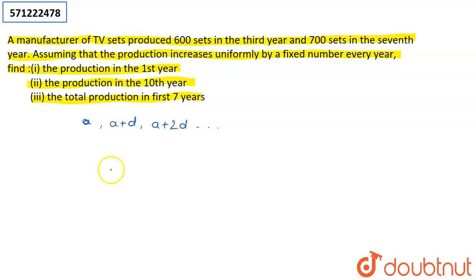So for any arithmetic progression, the nth term is given by a_n = A + (n-1)D, and the sum of first n terms is given by S_n = (n/2)[2A + (n-1)D].